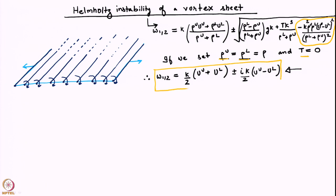The real part of the dispersion relation gives us the phase speed, telling us that for a perturbation k, the speed at which the disturbance propagates is the average of the two velocities. There is also an imaginary part, which depends on the difference between the two velocities. As long as u_u minus u_l is not equal to zero, you will always have instability. If u_u minus u_l is greater than zero or less than zero, one of the plus-or-minus pair will produce instability. So as long as there is any velocity difference between the two streams, we get an instability.